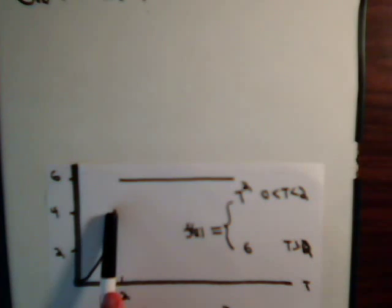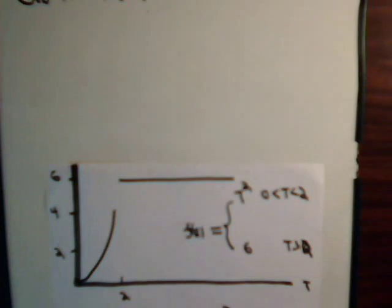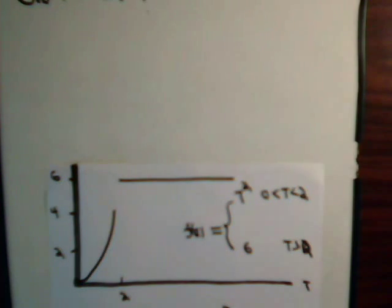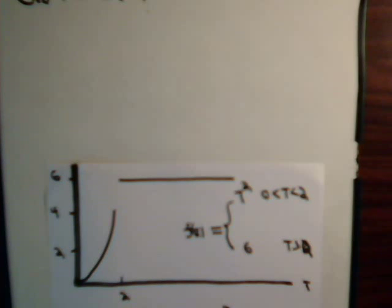Let's see how to find the Laplace transform of this simple function. Between the values of t being between 0 and 2, it's just this curve — part of a parabola, f of t equals t squared. Then after t takes on a value of 2, the function just has a value of 6, giving us the horizontal line. So it's a real simple function. What would be the Laplace transform of this function?